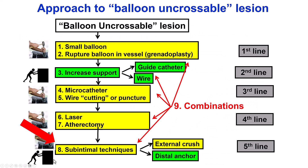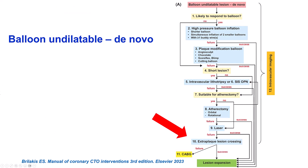For balloon-uncrossable lesions, the extra-plaque techniques are used if everything else fails. If all maneuvers to advance a balloon or microcatheter fail, the last resort is to go extra-plaque proximally and use the softer extra-plaque space to advance equipment. For balloon-undilatable lesions, similarly, if high-pressure balloons, plaque modification balloons, intravascular lithotripsy, very high-pressure balloons, or atherectomy laser all fail, the solution is to go extra-plaque and crush the plaque from the outside.